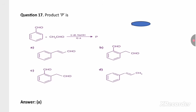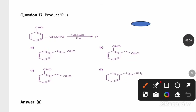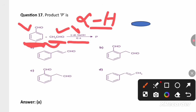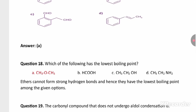Seventeenth question: identify product P in the given reaction. One reactant is benzaldehyde and the other is ethanal, which has alpha hydrogens. In the presence of NaOH, both undergo aldol condensation to produce an aldol intermediate, which on heating undergoes dehydration to give the product. Option A is the right answer.